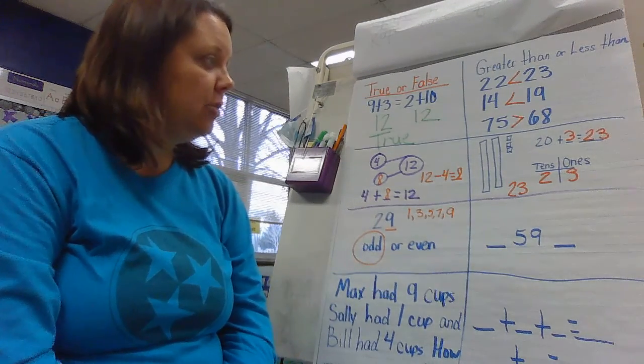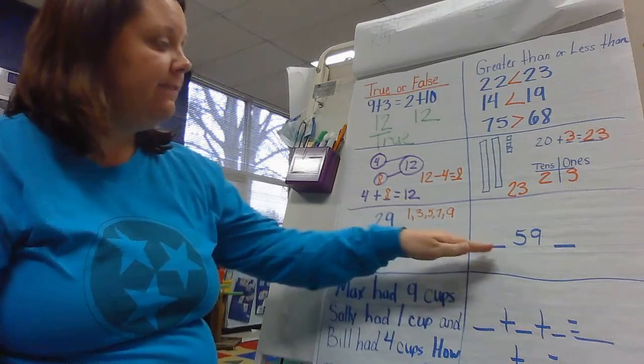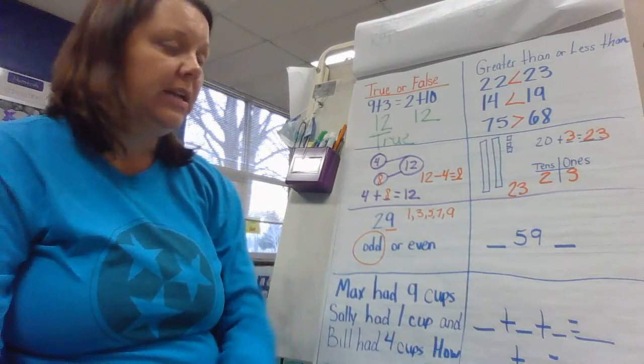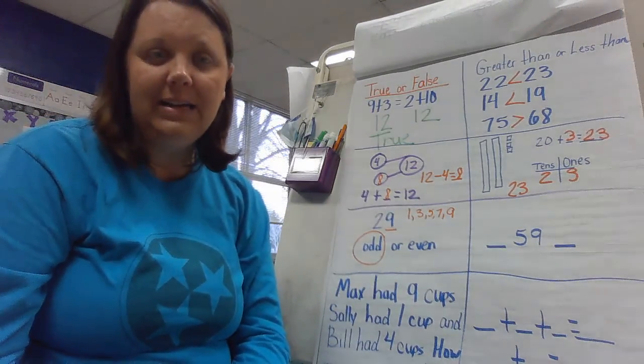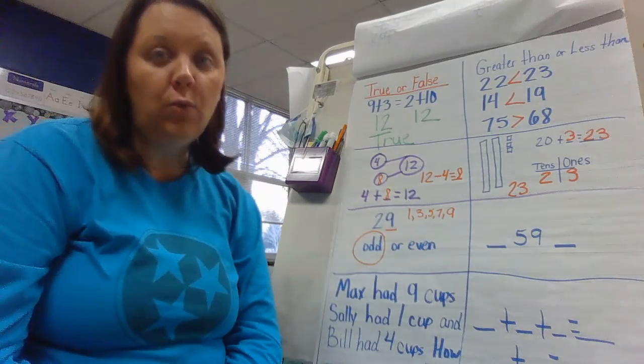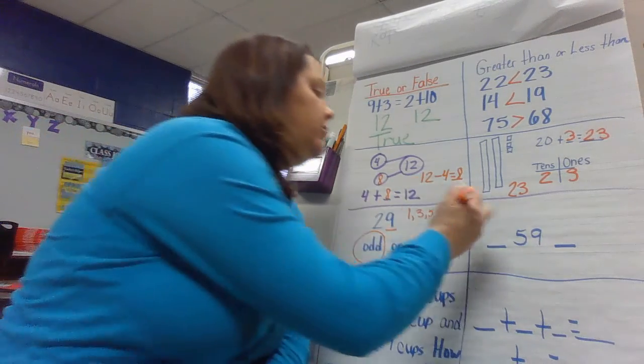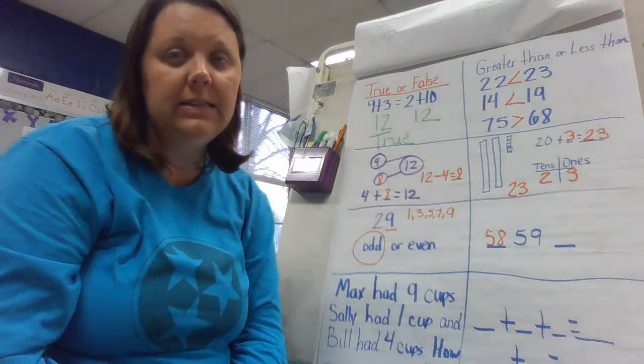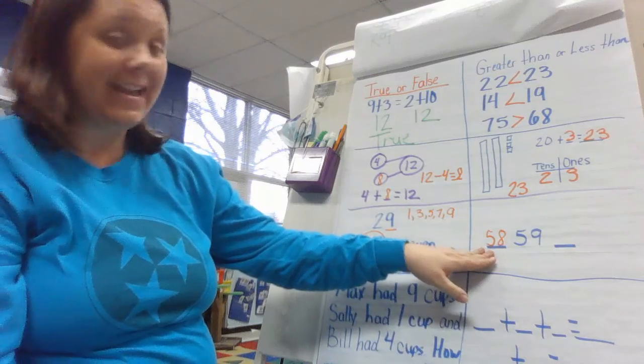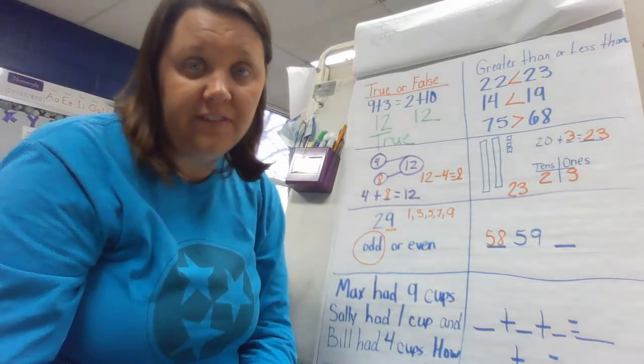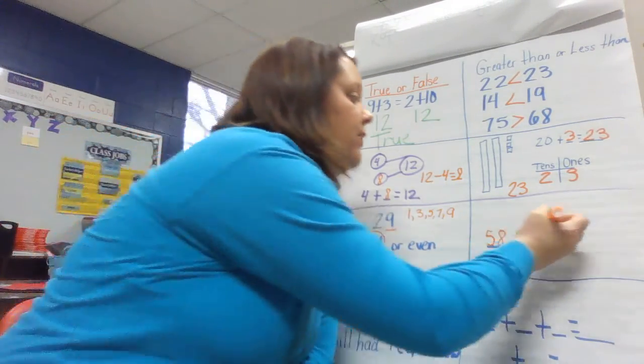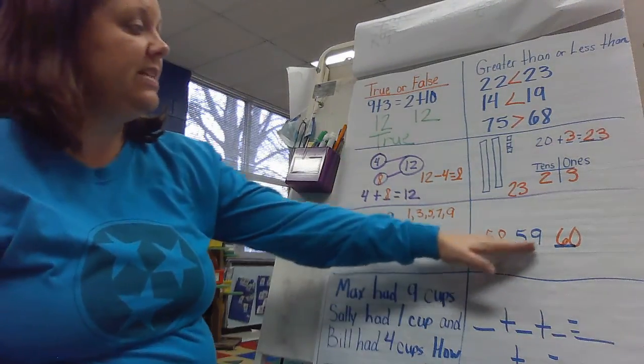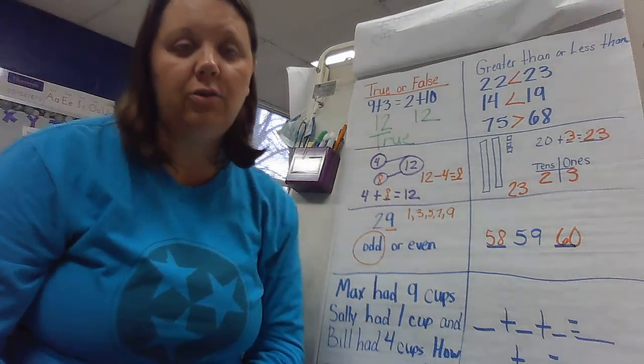And the next thing in our box here on our paper today is before and after. So I want you to think about this number represented here. And that is the number 59. And I want you to think about the number that comes before 59. And I want you to write that on your paper. So the number that comes before 59 is the number 58. Now what comes after 59? Well, that would be the number 60. So 58, 59, and 60. Hope you have that on your paper as well.